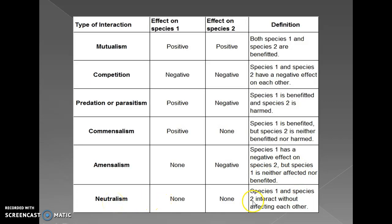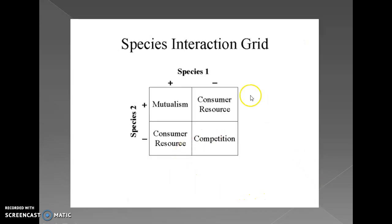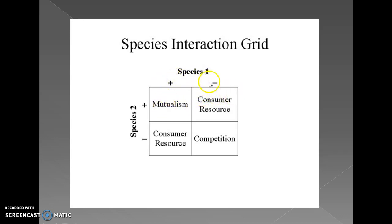In neutralism, species one and species two interact without affecting each other — no effect, both acting as neutral. The species interaction grid shows: in mutualism, both are benefited — plus-plus. In consumer-resource interaction, one has plus and the other has minus — species two is harmed, species one is benefiting. In competition, both species one and two have negative impact on each other. This grid clearly summarizes all the interaction types.